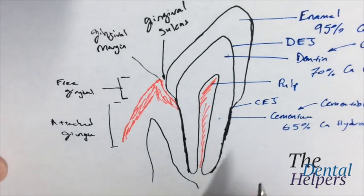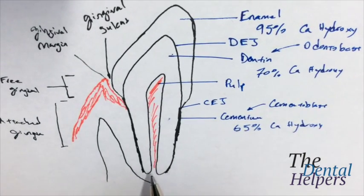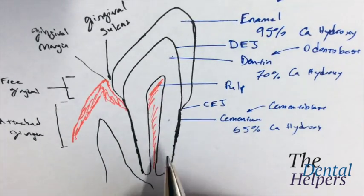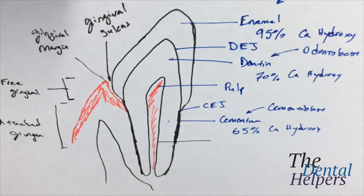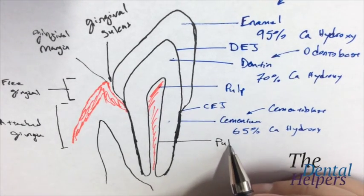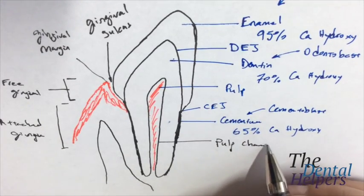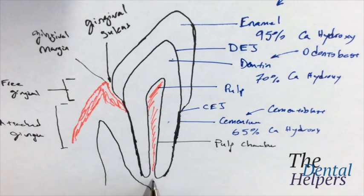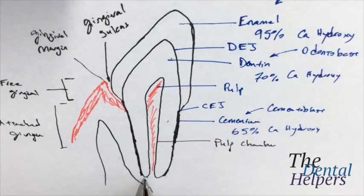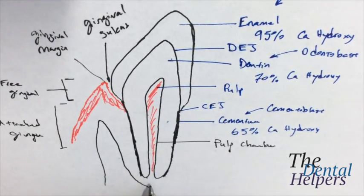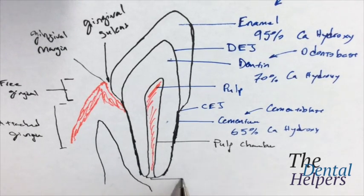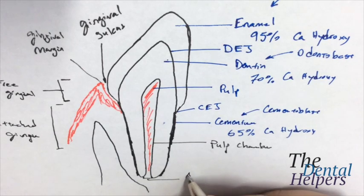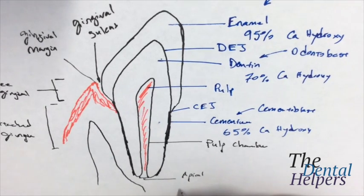The only other thing I probably forgot is right here, where the pulp is. The outside part that holds the pulp is called the pulp chamber. And it comes out, or the pulp comes in through what's called the apical foramen.